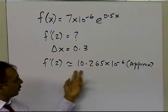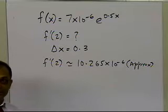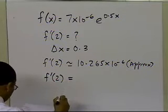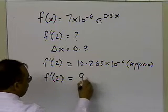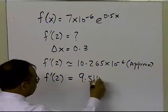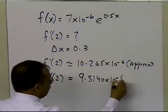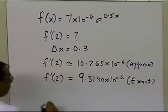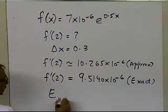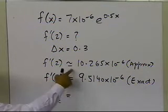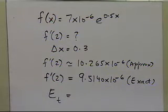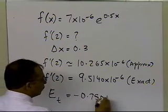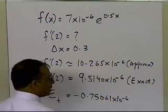If you want to convince yourself that's what you're going to get, go ahead and do this as a homework problem. The exact value of the derivative will turn out to be 9.5140 times 10 to the power minus 6. And if I calculate what the true error is between the exact and approximate values, I'll get minus 0.75061 times 10 to the power minus 6.